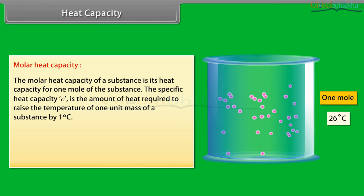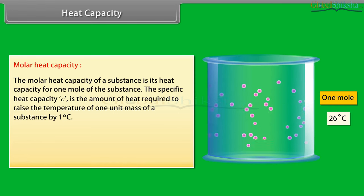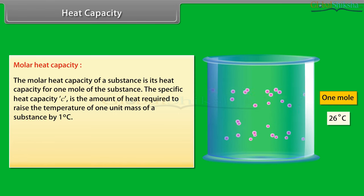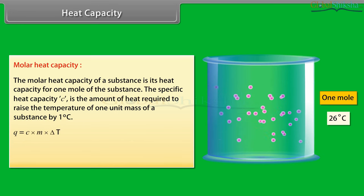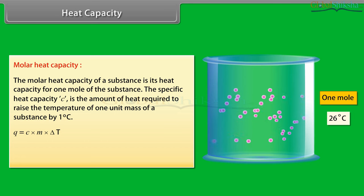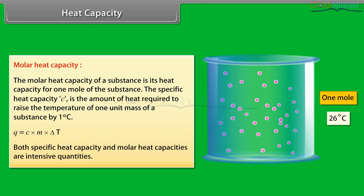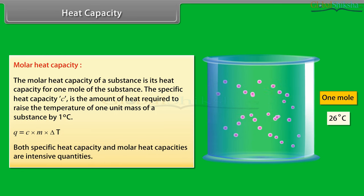The specific heat capacity is the amount of heat required to raise the temperature of 1 unit mass of a substance by 1 degree Celsius. Q = C × m × ΔT. Both specific heat capacity and molar heat capacities are intensive quantities.